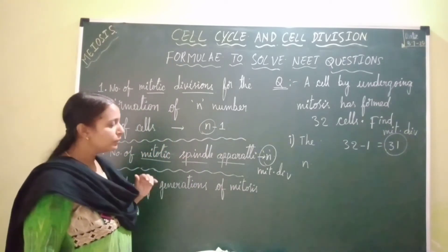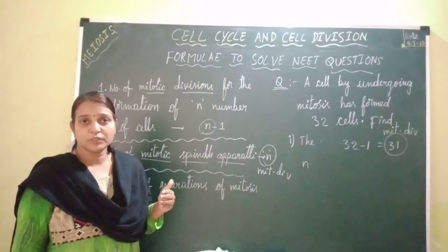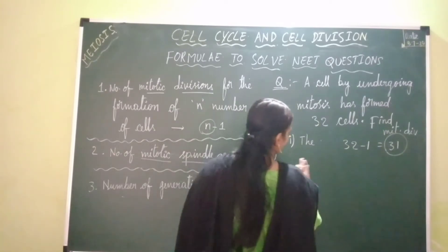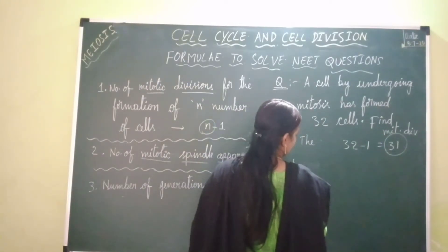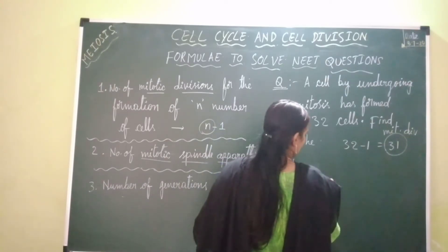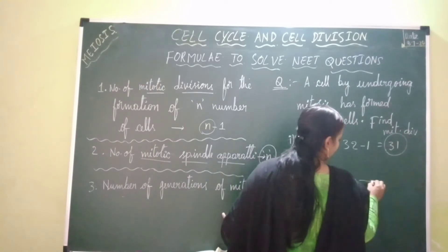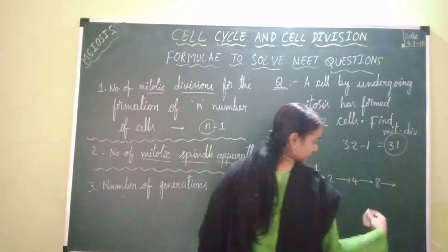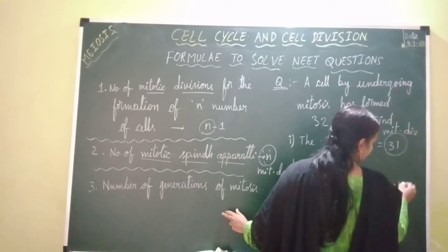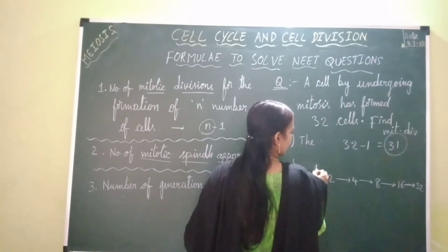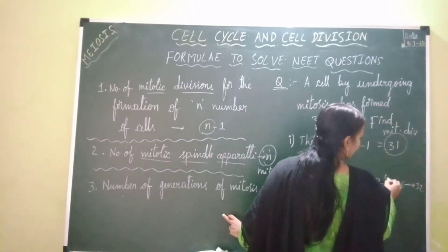Number of generations of mitosis: one cell undergoes mitosis and forms 32 cells finally. One cell forms two cells in the first generation. These two cells undergo mitosis and form four daughter cells. Four become eight in the next generation, eight become sixteen, and sixteen become 32. So there are 1, 2, 3, 4, 5 generations.